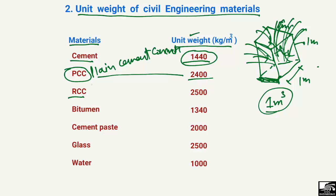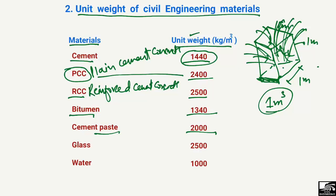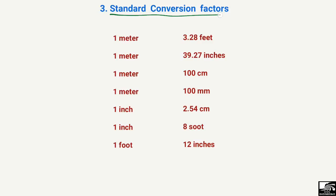RCC — reinforced cement concrete, where steel bars are used — has a unit weight of 2500 kg/m³. For bitumen it is 1340 kg/m³, for cement paste it is 2000 kg/m³, for glass it is 2500 kg/m³, and for water it is 1000 kg/m³. These are the general unit weights of civil engineering materials commonly used in daily practice and soil engineering calculations.